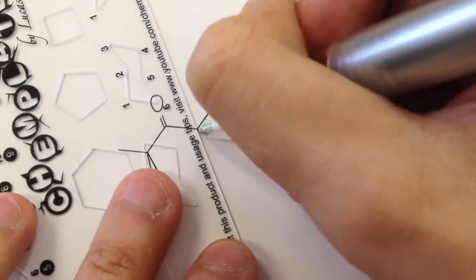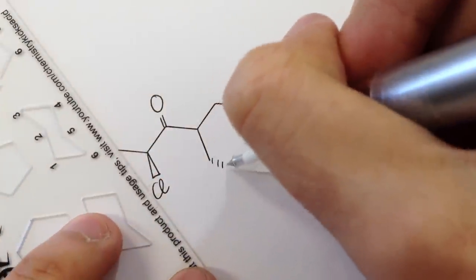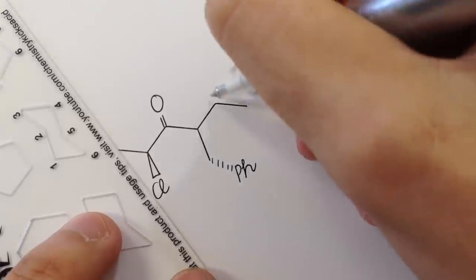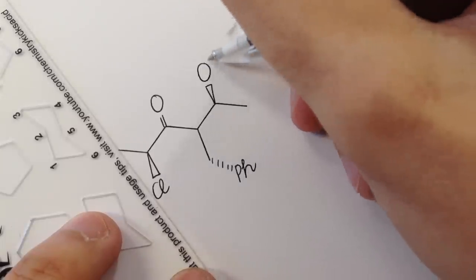As my professor said, you know you are good at organic chemistry when you can draw a perfect benzene ring. With ChemPlate, all of us can be good at organic chemistry.